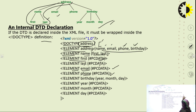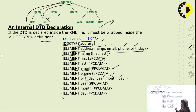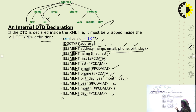The next element is birthday. From the tree, birthday has a further division into three parts: year, month, and day. So we write ELEMENT birthday (year, month, day). Then we declare ELEMENT year, ELEMENT month, and ELEMENT day — all with data type PCDATA.